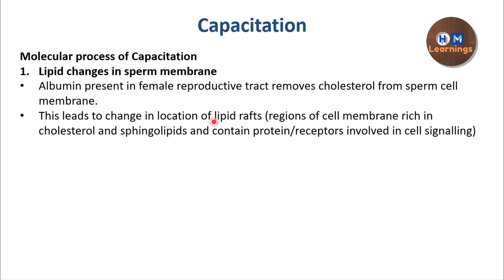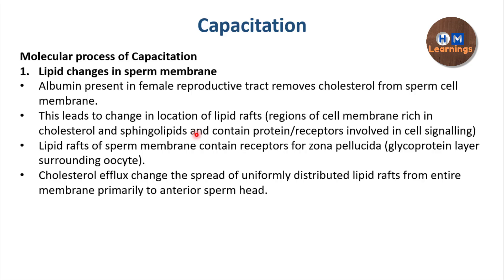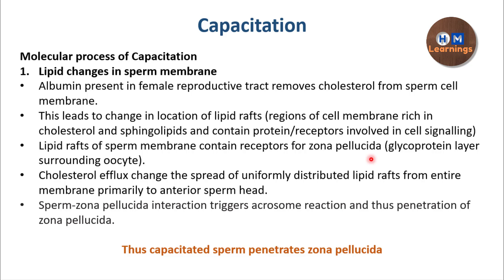Before cholesterol efflux, the lipid rafts are uniformly distributed throughout the sperm membrane. Because of cholesterol efflux, the position of the lipid rafts changes from all over the membrane to primarily the anterior sperm head — over the membrane surrounding the acrosome. These lipid rafts carry receptors for the zona pellucida. The receptors for the zona pellucida glycoprotein layer surrounding the oocyte, instead of being spread throughout the membrane, become clustered on the anterior part of the membrane, which comes into contact with the zona pellucida layer.